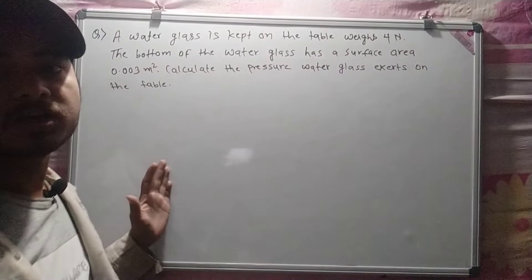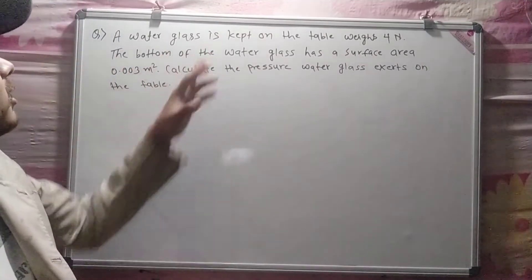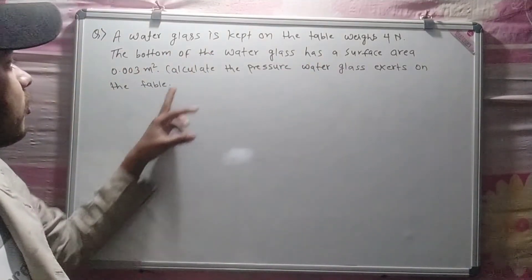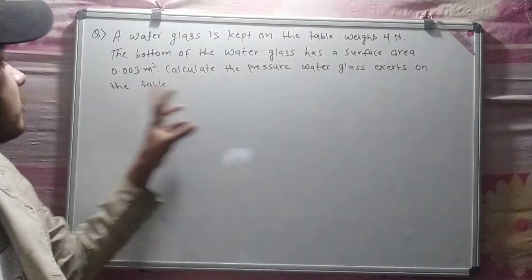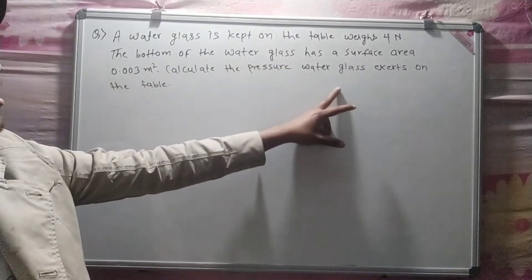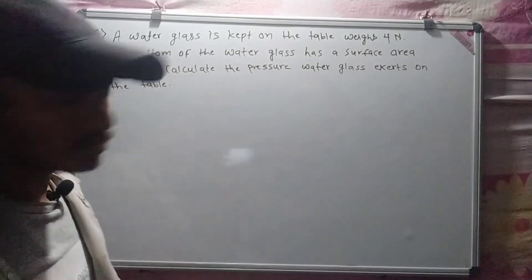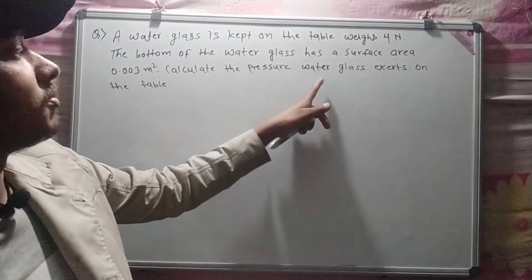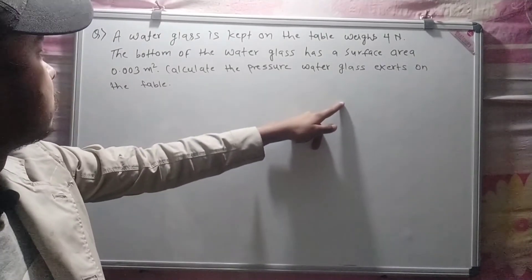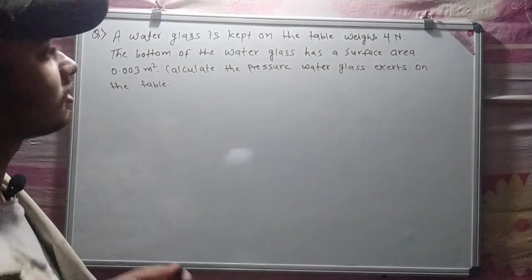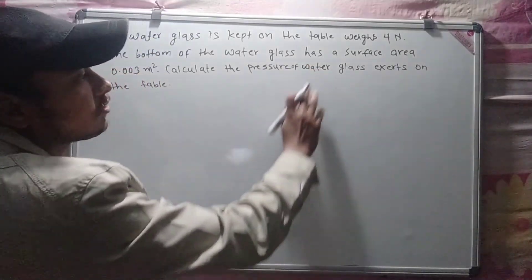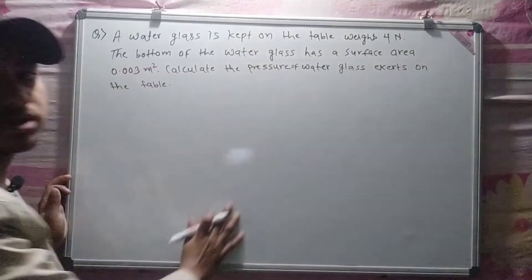Now let's look at an example. The weight of a water glass is 4 Newton. The bottom surface area of the water glass is 0.003 meters square. Calculate the pressure of the water glass on the table.